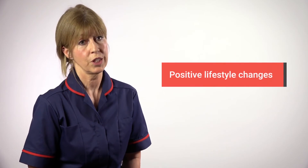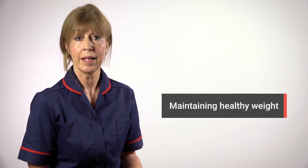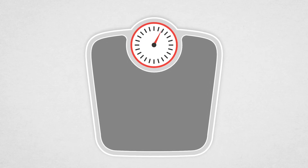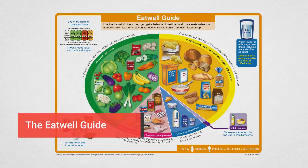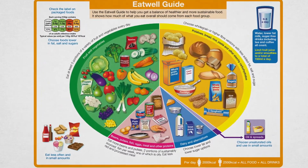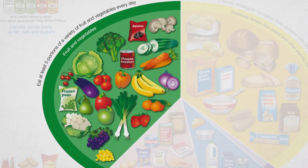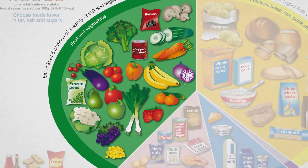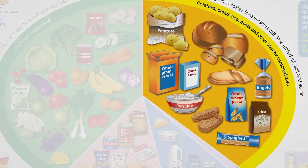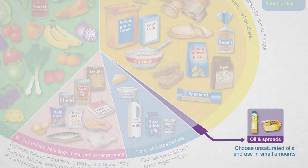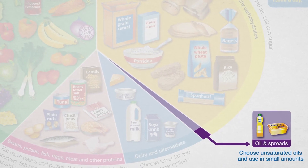A person can reduce the HbA1c by making positive lifestyle changes. These might be maintaining a healthy weight or increasing physical activity. A high body weight or large waist measurement can increase your risk of developing type 2 diabetes. To maintain a healthy weight, refer to the EatWell guide. This encourages you to eat at least five portions of fruit and vegetables every day with a higher focus on vegetables. Increasing fibre and whole grain foods while reducing saturated fats can also help you to maintain a healthy weight.